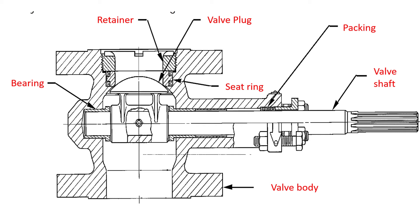The valve shaft is the one that transmits torque to the valve plug. Because the process fluid may have high piping pressure, the valve shaft must deliver the required torque to the valve plug to act against that pressure and throttle the process fluid.